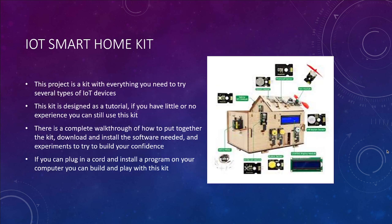The first project I'd label as a really great beginner project: an IoT smart home kit. You can actually just buy this kit on somewhere like Amazon. It has everything you need. If you wanted to try working with some internet of things devices, see how the hardware works, maybe do something with kids or as a class activity, these kits have everything all in one. It's designed as a tutorial — if you can plug a cable into your computer and install a program, you can do this kit. There's a complete walkthrough of how to put everything together and install the software.